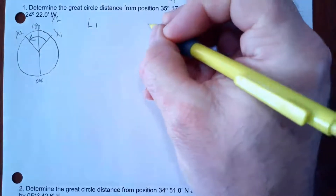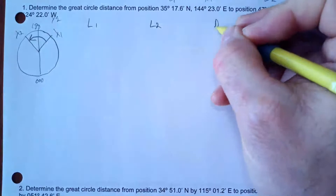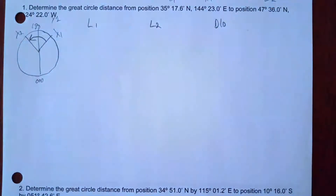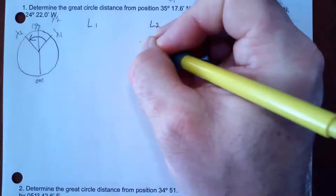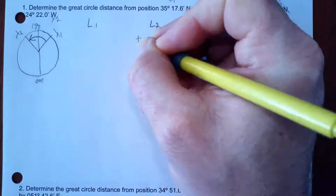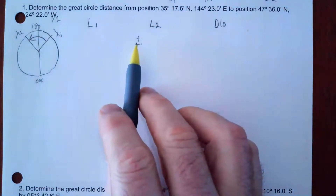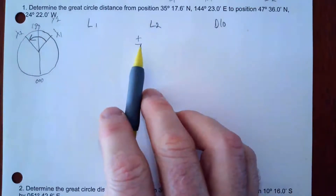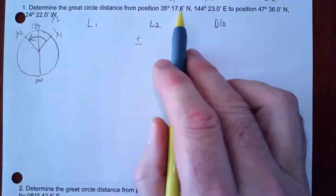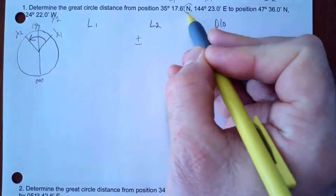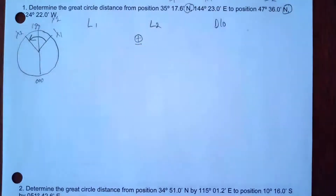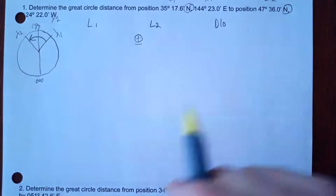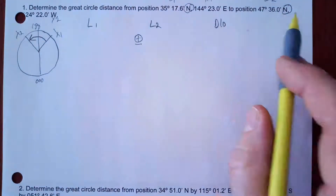I'm going to label L1, L2, and D-low on the picture. Now, one of the things with L2 is I need to determine plus or minus — whether I treat it as positive or negative. What's the sign of L1? It's North. What's the sign of L2? It's North. That means it's positive. So I'm going to treat L2 as a positive because I didn't cross the equator.